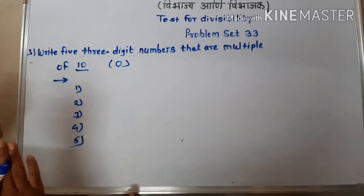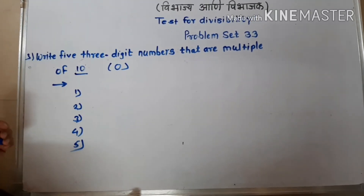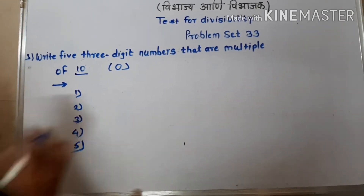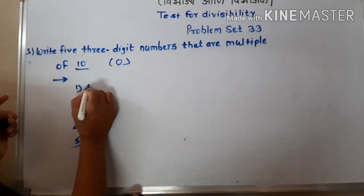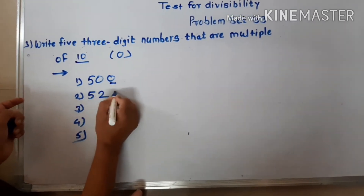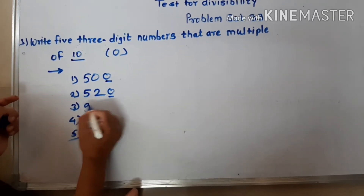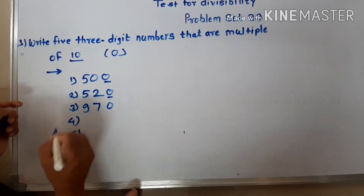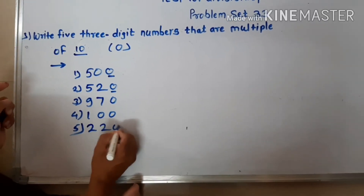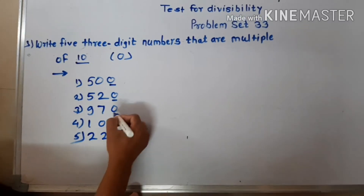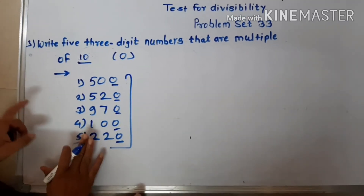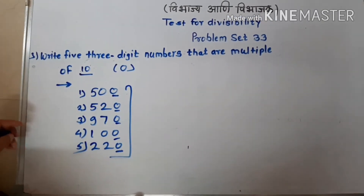Those numbers are exactly divisible — no remainder. When divided by 10, the remainder is zero. The numbers we write are: 500, 520, 970, and 100. For all these numbers, check the unit place — it has 0. Therefore these numbers are multiples of 10.